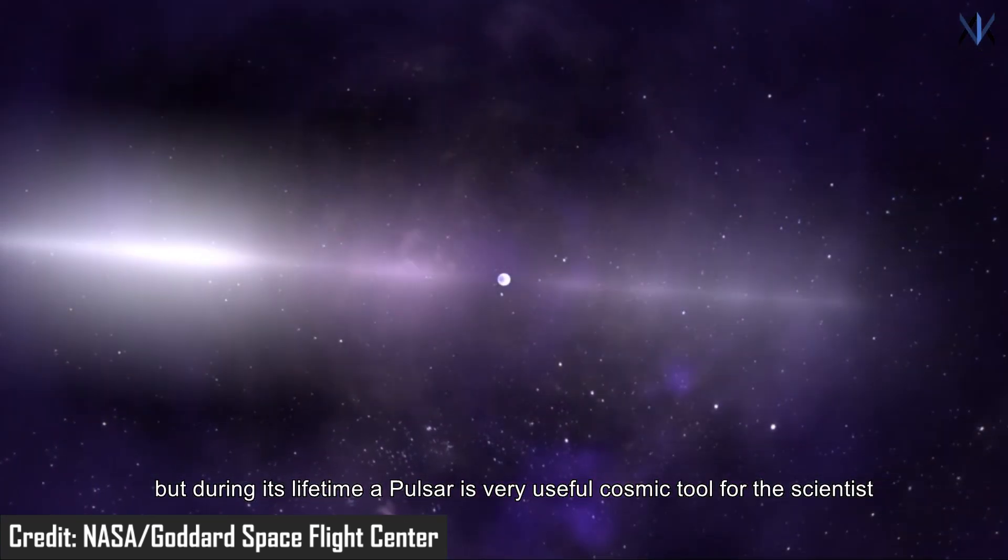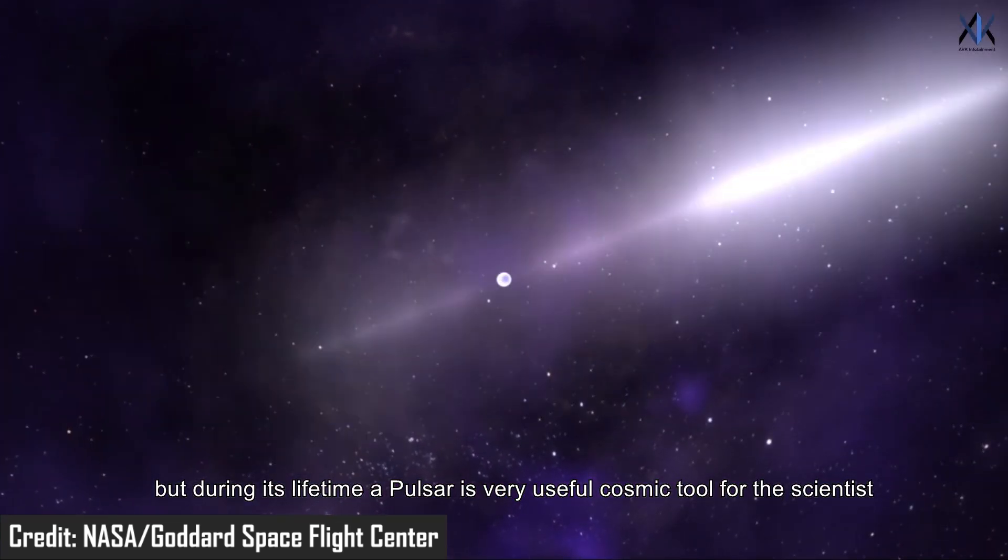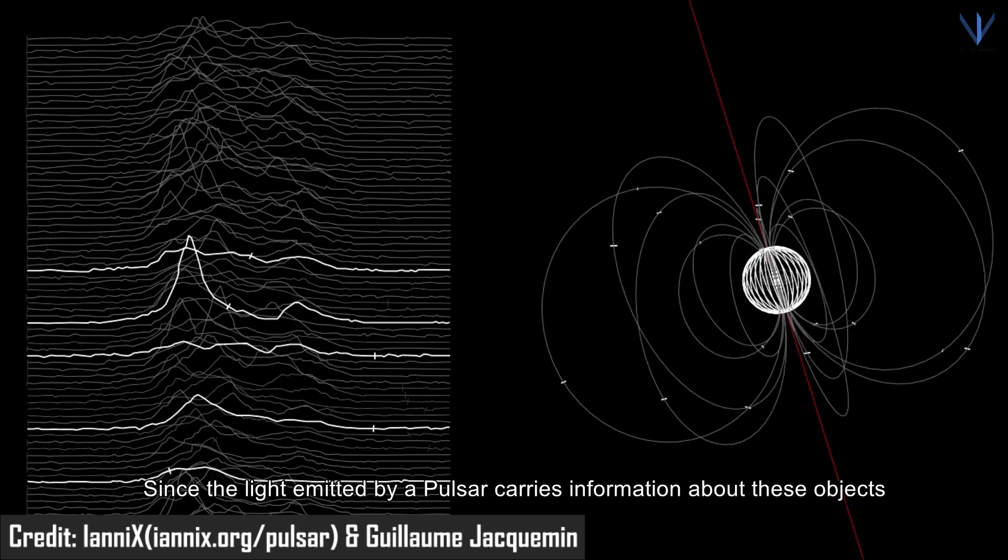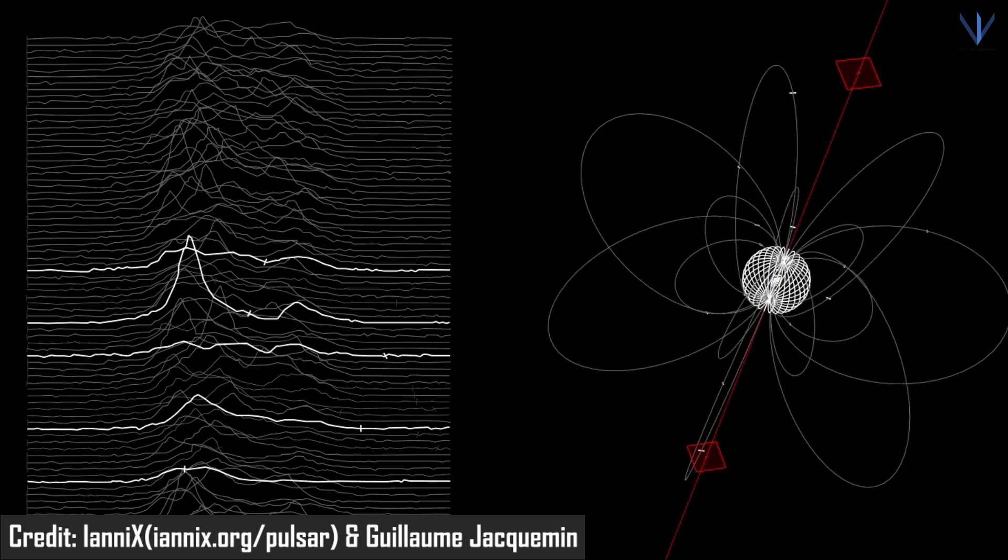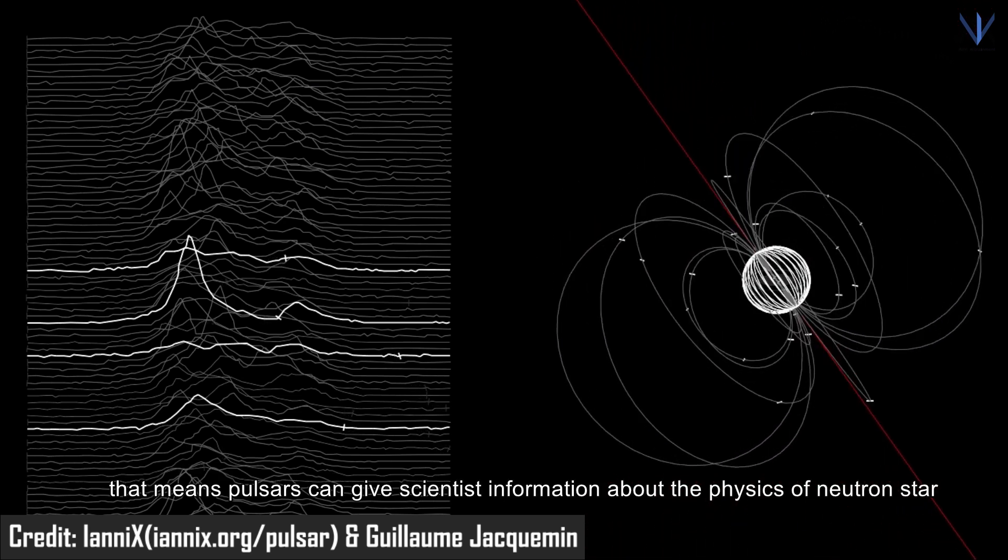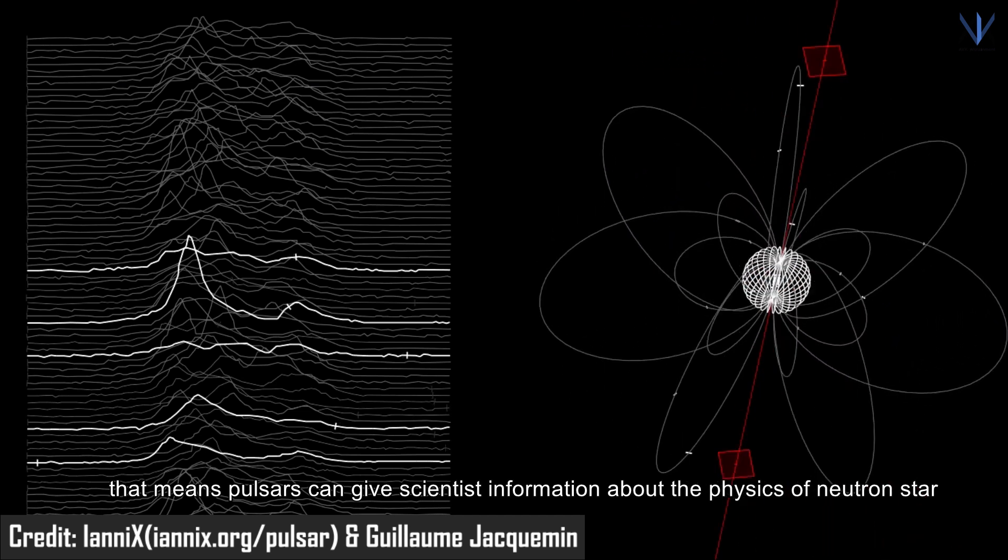But during its lifetime, a pulsar is a very useful cosmic tool for scientists to study a range of phenomena. Since the light emitted by a pulsar carries information about these objects and what is happening inside them, pulsars can give scientists information about the physics of neutron stars.